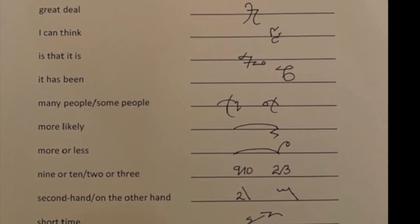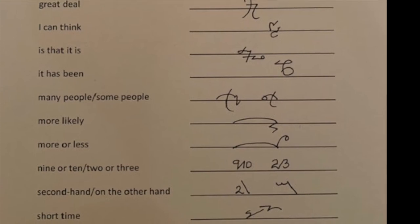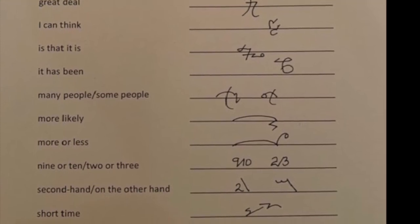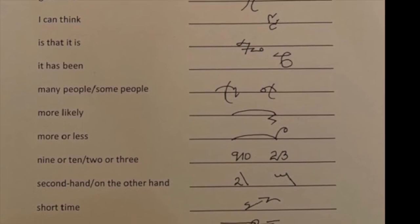9 OR 10, 2 OR 3. Once you've written the first figure, keep the pen on, write an R for OR and then the other letter without lifting the pen.